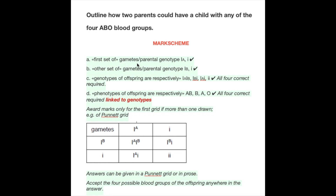But looking at the mark scheme: the first set of parental genotypes shown gets one mark, the second set gets a mark, and showing all offspring genotypes gets the third mark. To get the fourth mark, however, the phenotypes of the offspring need to be listed — not just listed, but all four correct and linked to the genotypes. So in brackets next to each genotype you should write type AB, type B, type A, and type O. Paying attention to these little details turns what might be three marks into the four marks you expect and deserve.